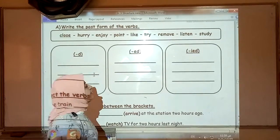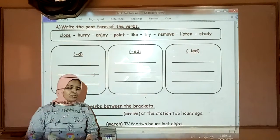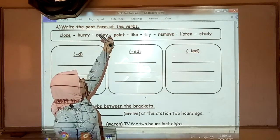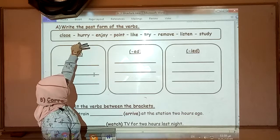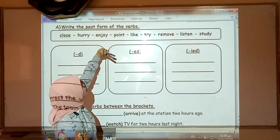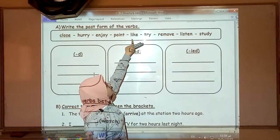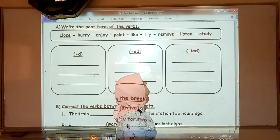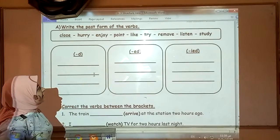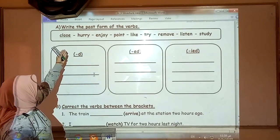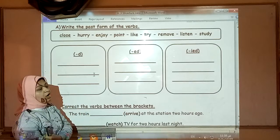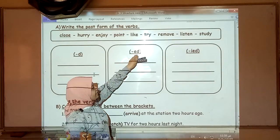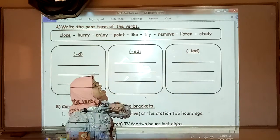Now, let's check the classwork together. Write the past form of the verbs: close, hurry, enjoy, point, like, try, remove, listen, and study. Okay, he wants us to sort them in the correct box. Adding D only, adding ED, and adding IED.